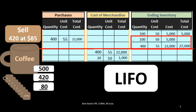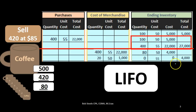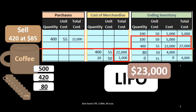What does that leave us with at the end? We have zero of the 400 units at $55 — those are gone. We're left with 100 minus 20, or 80 units of the $50 batch, which is $4,000 in ending inventory. So we have $4,000 left over in ending inventory, and the cost of goods sold for this sale is $23,000 using the last in first out method.